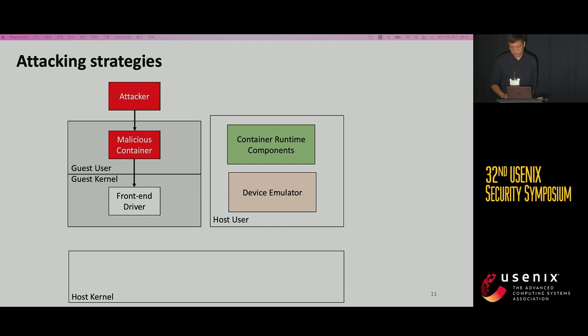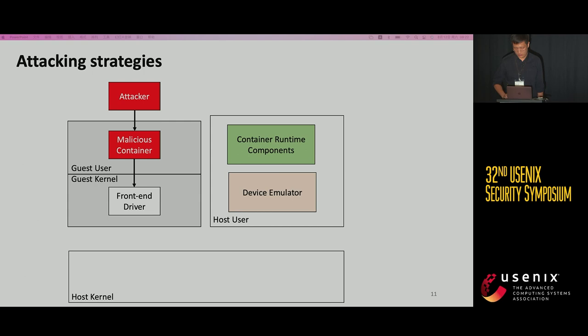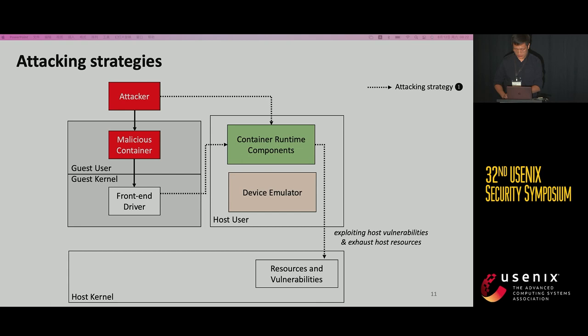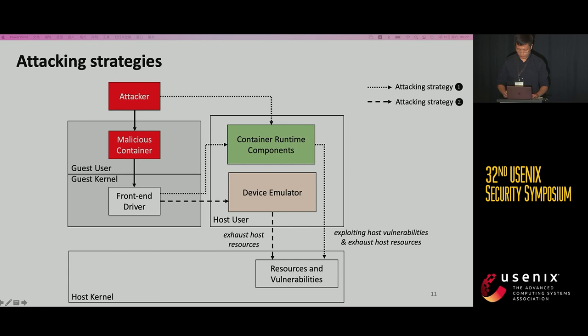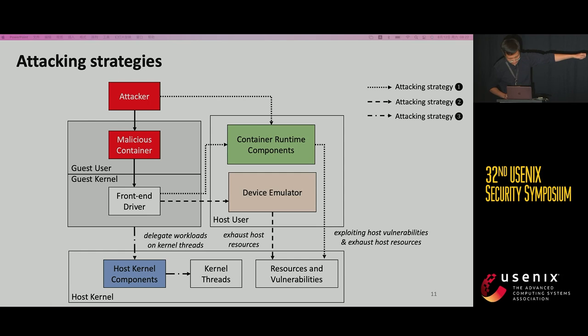We have seen that improper operation forwarding passes can introduce attacks, but how do we systematically find more attacks? We design three strategies. The key idea is leveraging the operation forwarding of each layer's components to improperly call host syscalls or kernel functions. First, an attacker-controlled container can trigger the container runtime components to make host syscalls and exploit host vulnerabilities or exhaust host resources. Second, the malicious container can force the device emulator to invoke host syscalls and exhaust host resources. Third, the malicious container can forward its operations to host kernel functions through host kernel components and generate out-of-band workloads on host kernel threads.